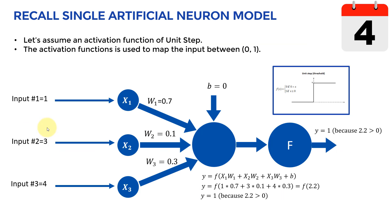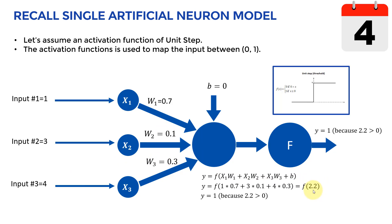I want to show you a reminder of how to build a basic single artificial neuron model. To build a single neuron, we assume we have a bunch of inputs — input 1, 2, and 3 — along with a bunch of weights and a bias signal. We substitute into the equation: y equals f, our activation function, where we multiply each input by its weight. So we multiply 1 times 0.7, 3 times 0.1, and 4 times 0.3, ending up with 2.2.